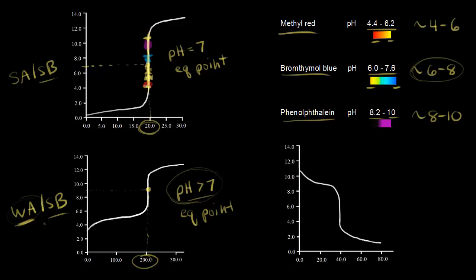For the titration of a weak acid with a strong base, the pH is greater than seven, so you want to choose an indicator that changes color in a range greater than seven. Phenolphthalein would work really well because it changes in a range of 8 to 10 — you'd see a color change from colorless to pink or magenta, and stopping there gives a good approximation of the equivalence point. You wouldn't want to use methyl red here, because it changes in the range of 4 to 6, which would cause you to miss the equivalence point.